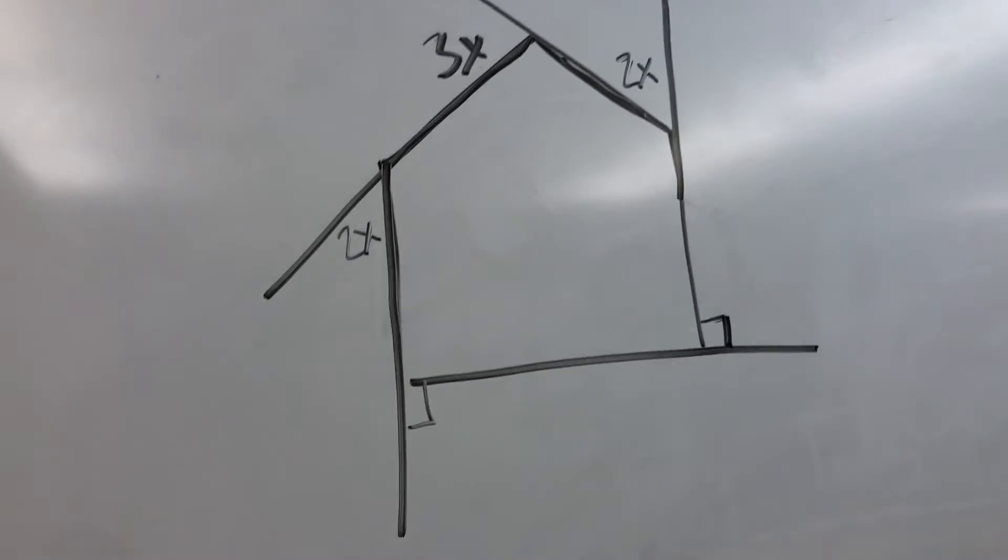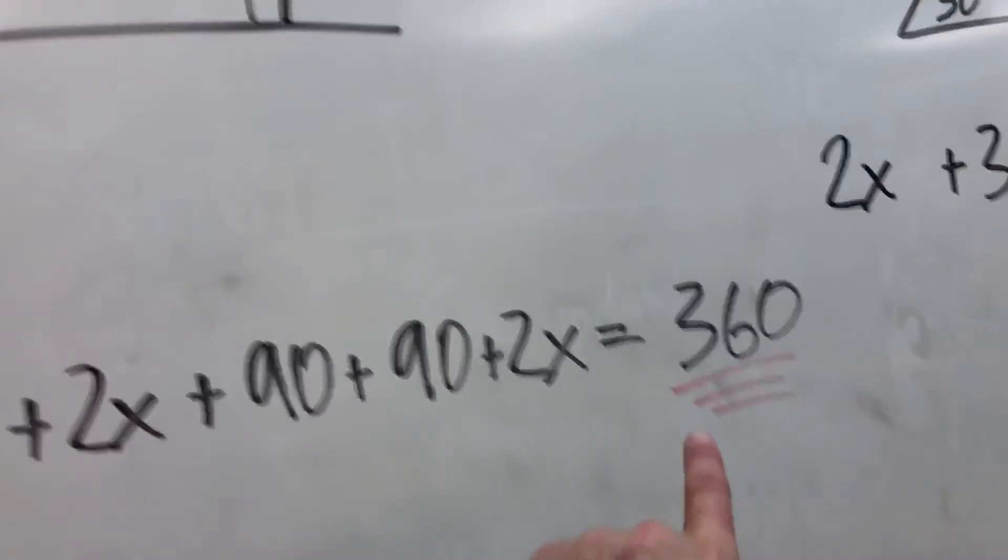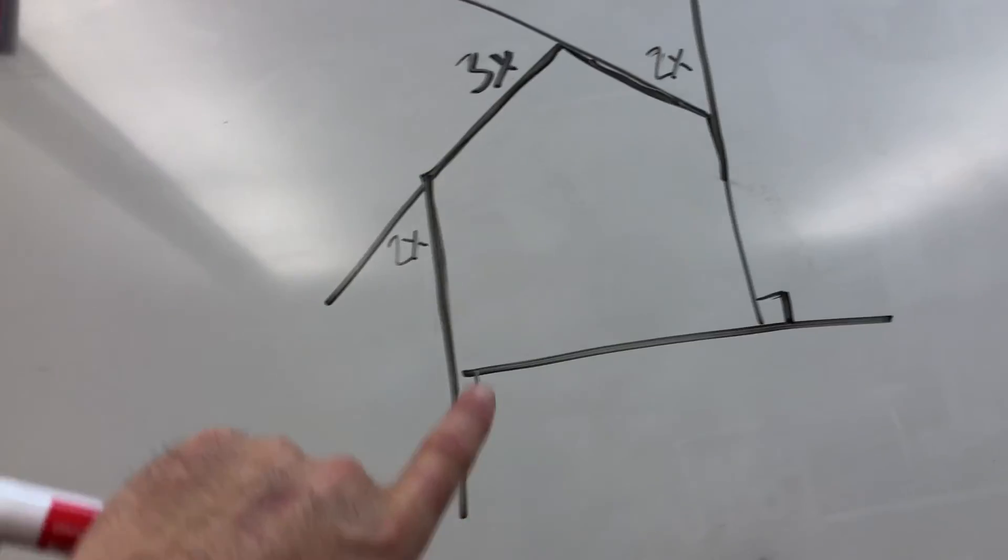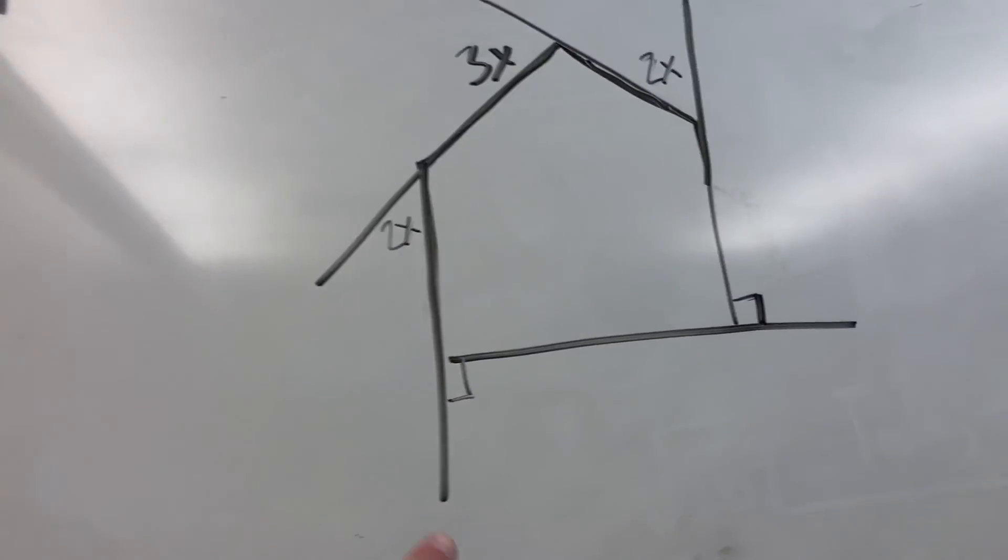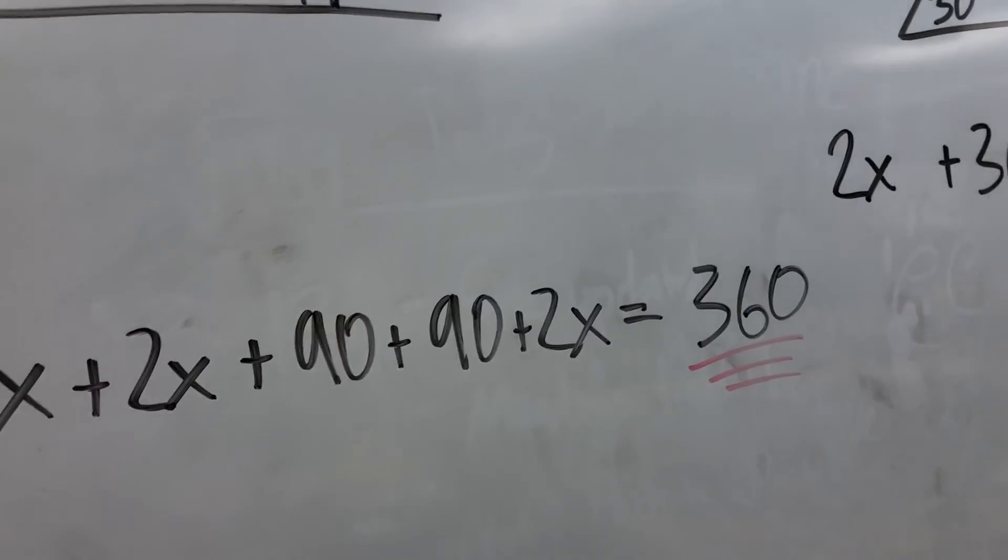If they're exterior angles, and this is nice, the magical number is always 360. It doesn't matter if it's a triangle, a square, a pentagon, a hexagon, a duodecagon, any kind of sided polygon, the magical number will always be 360.